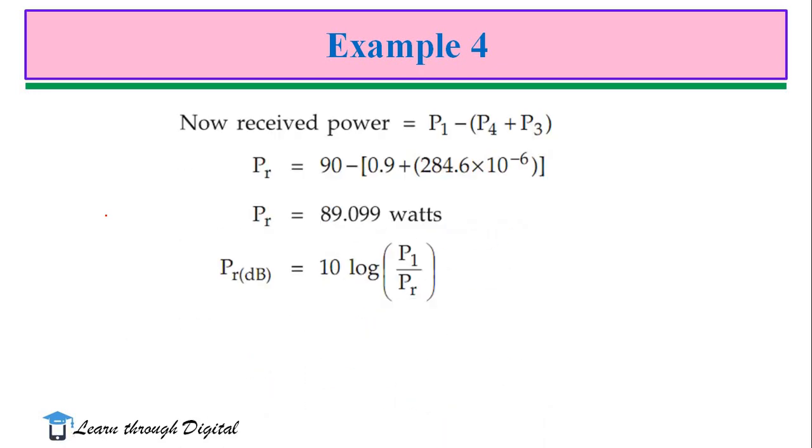Next, now the received power is P1 minus P4 plus P3. Incident power minus power at 4th port and the 3rd port.